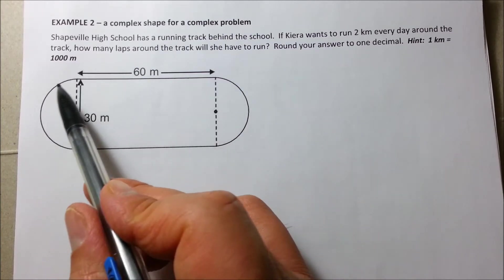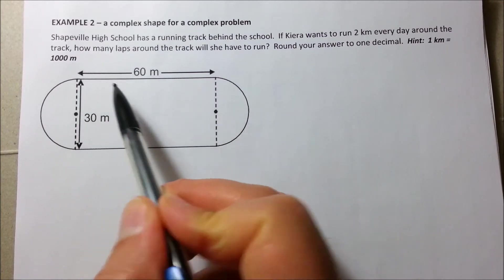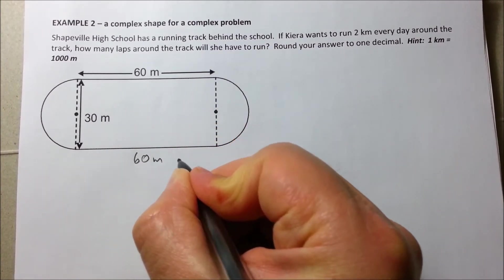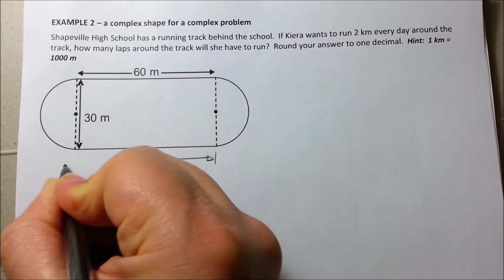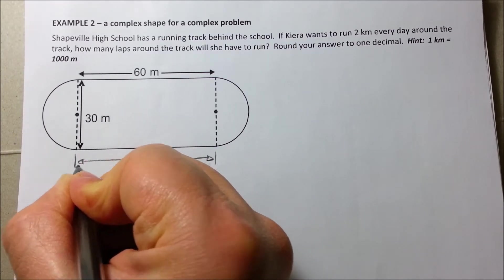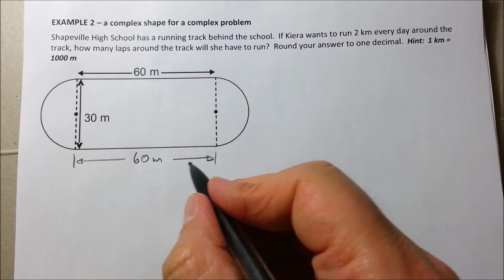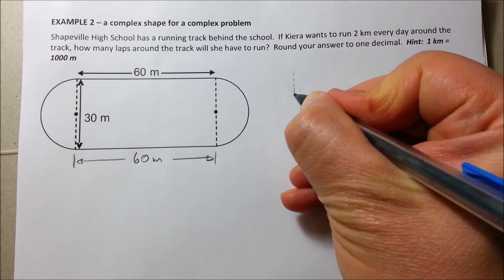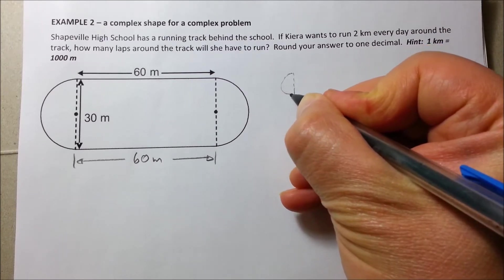So, really to find out the length of this running track, we need to add 60 plus another 60 meters here, right? Plus the length of these two. Now, we know that if we add these two, let me just graph them. Although I think it's pretty obvious.